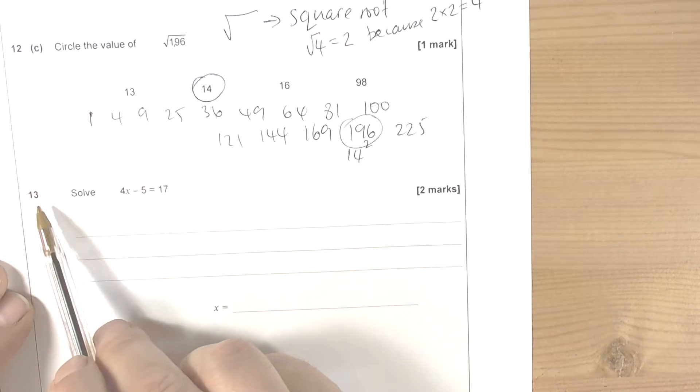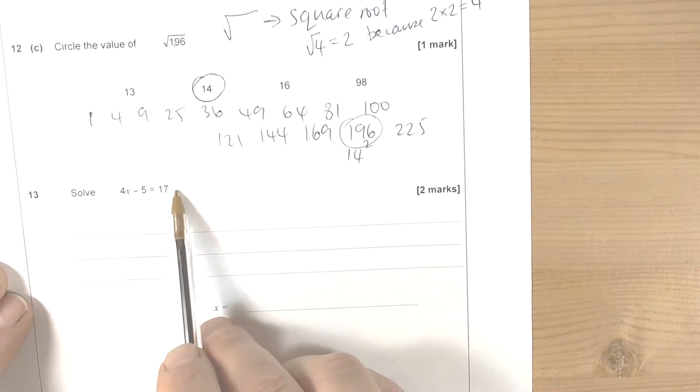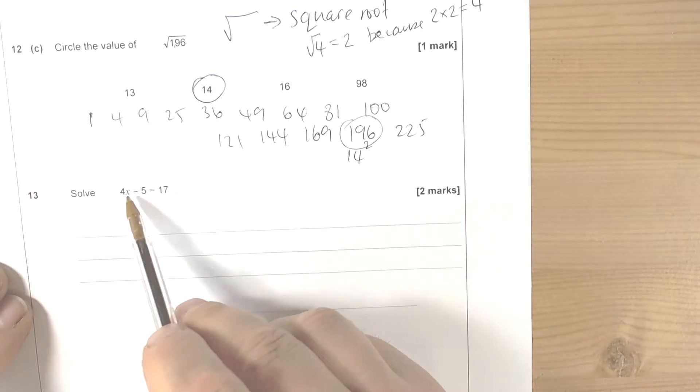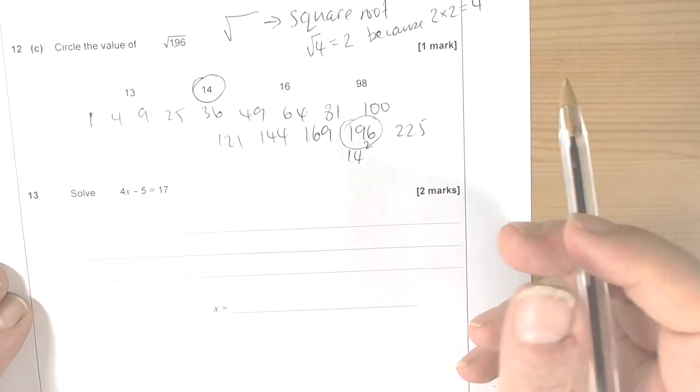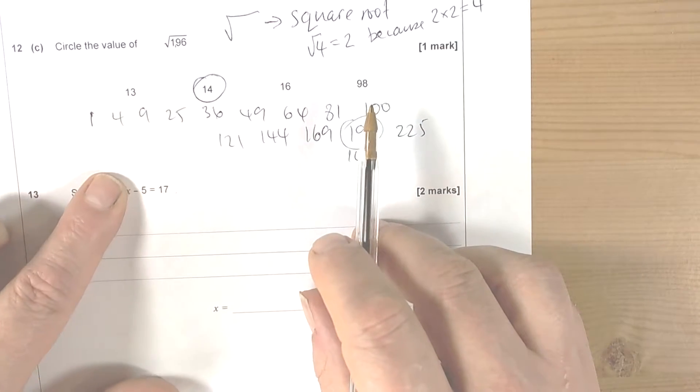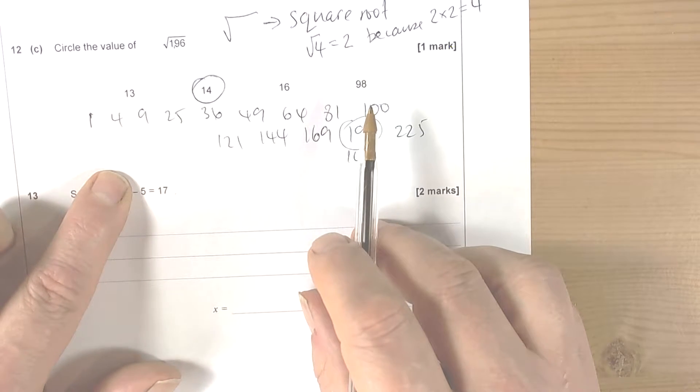The next part of this question goes on, for question 13, solve this equation. Solve means find the value of x that makes this true. There are lots of ways to try to do this. You could cover that up and say, well what do I take 5 away from to give me 17?